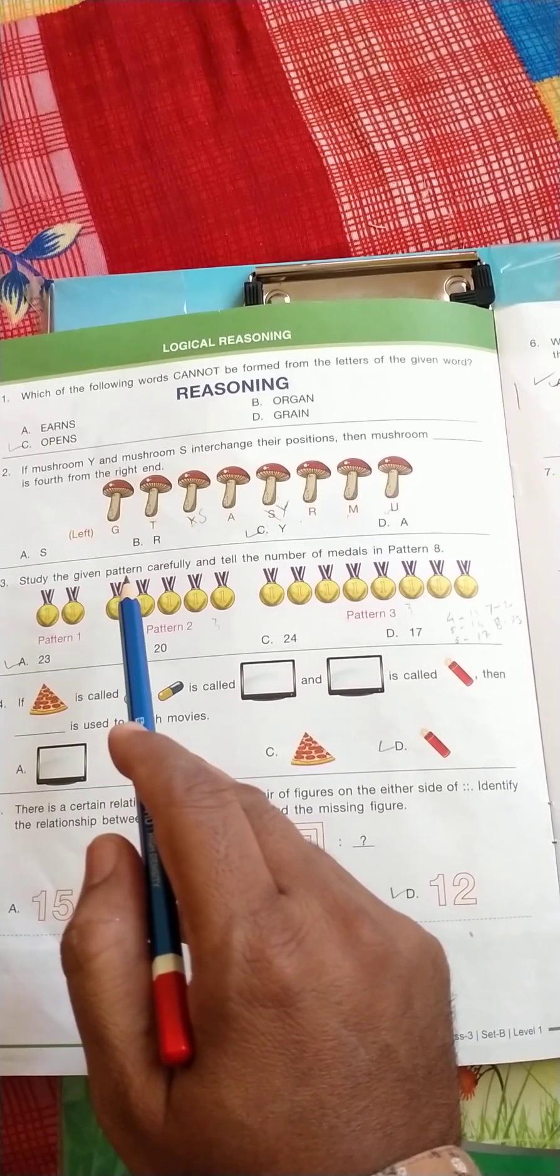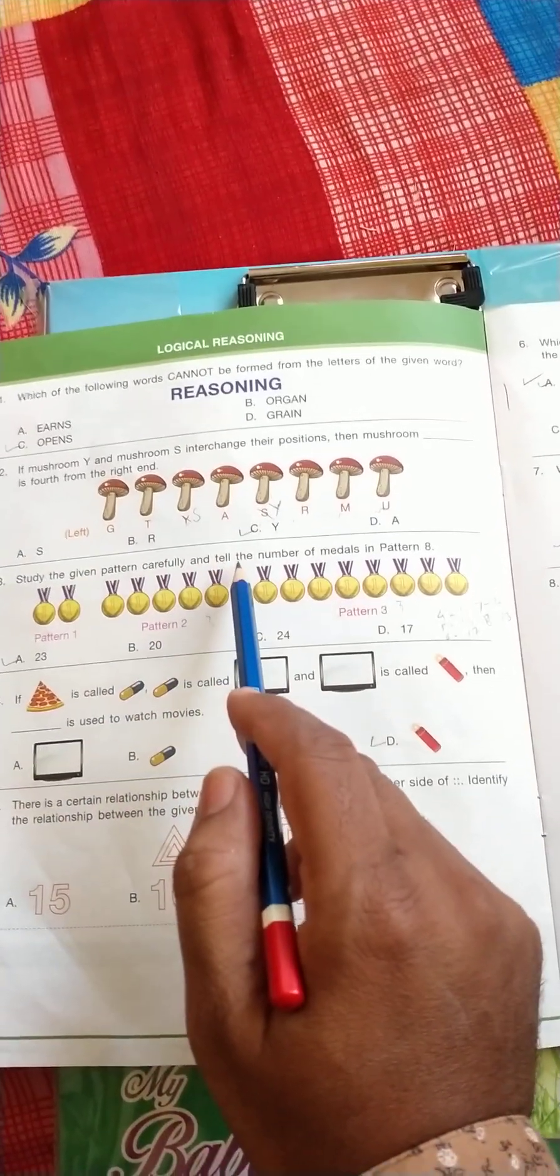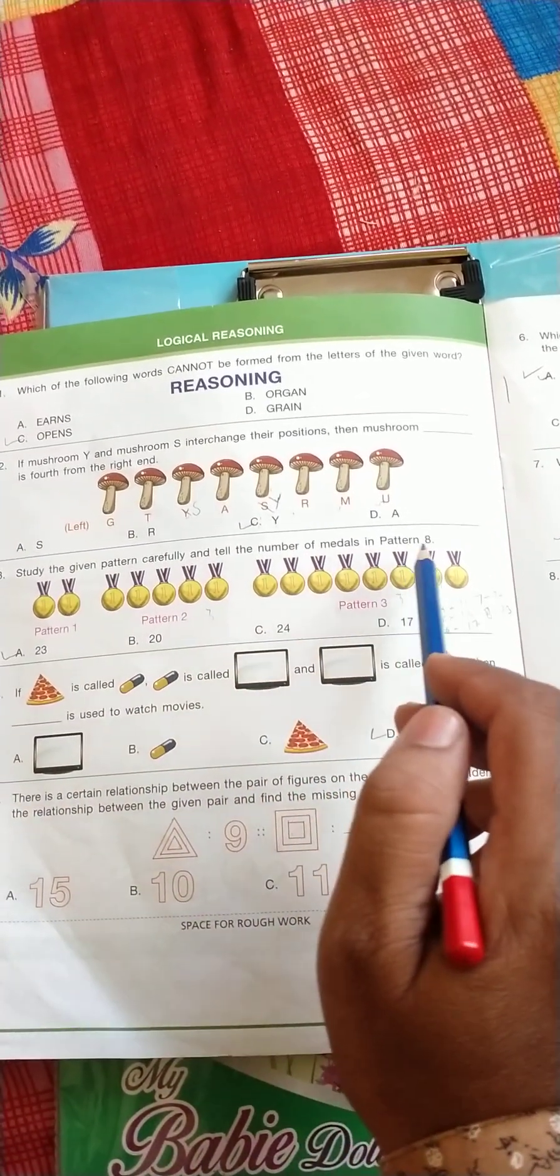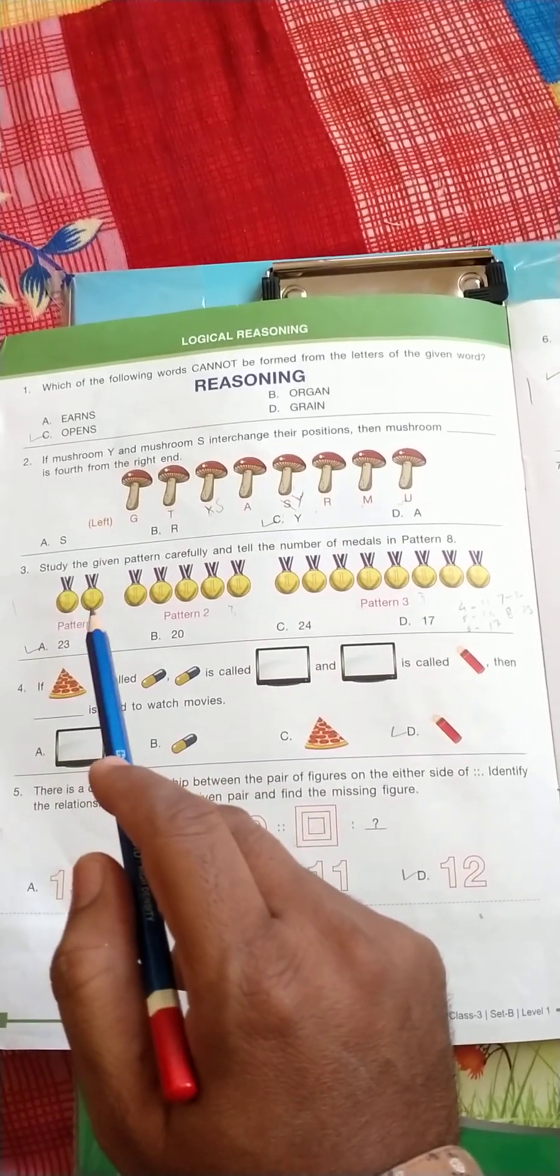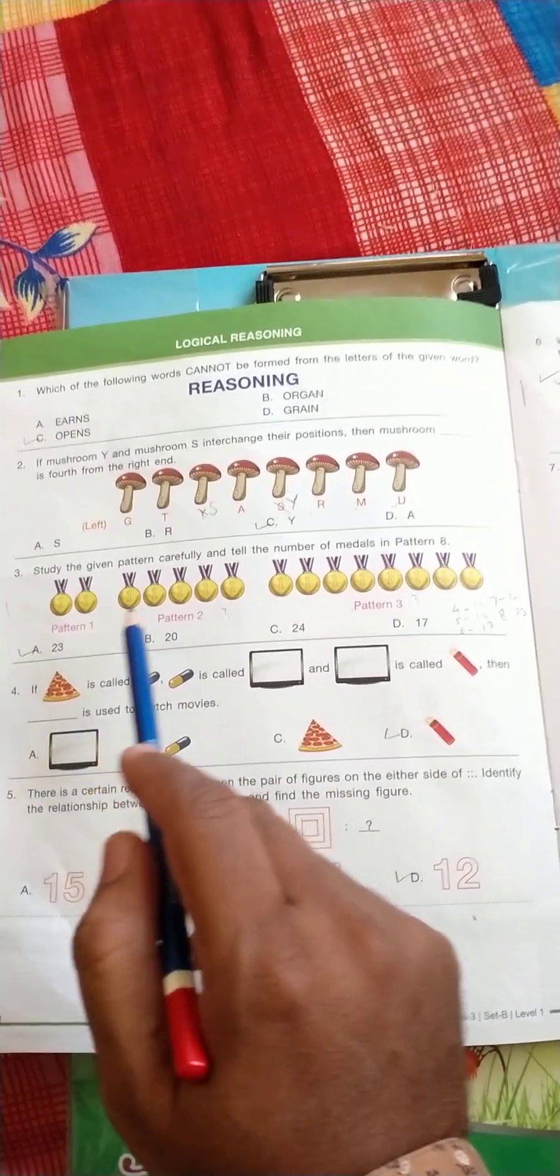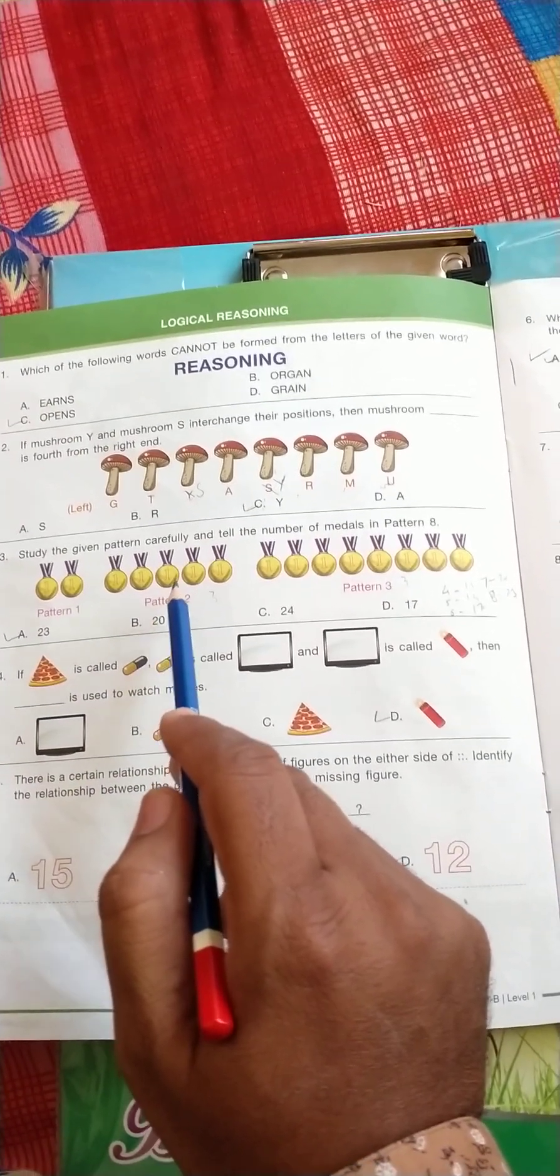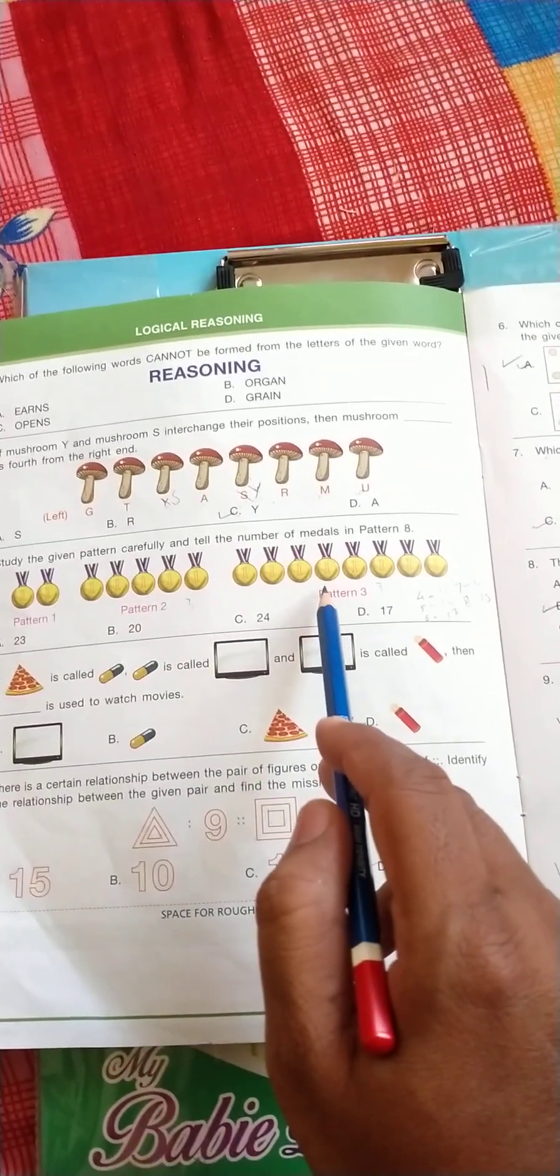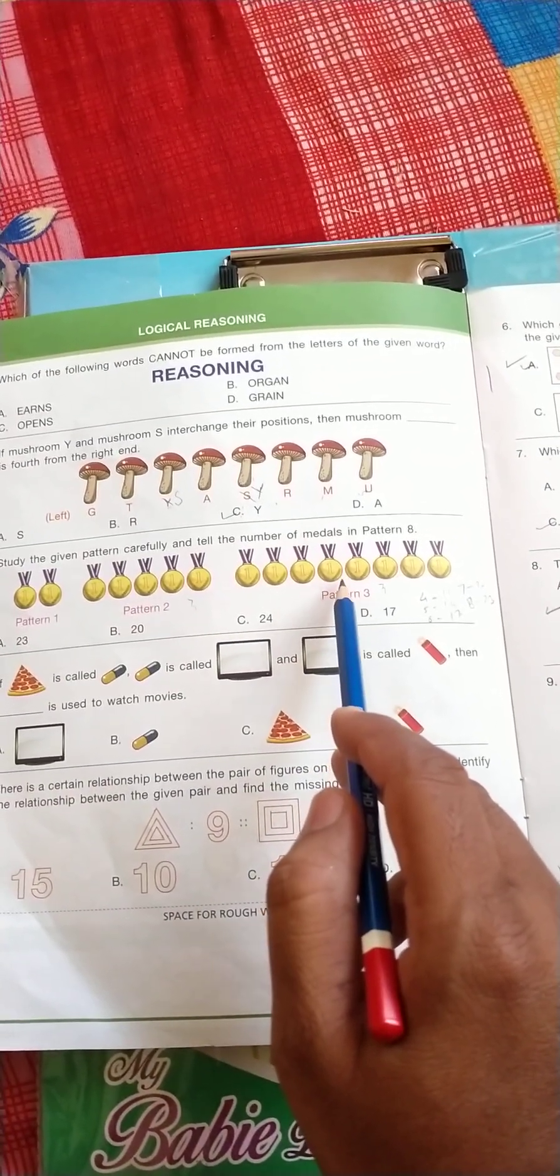Question number three: study the given pattern carefully and tell the number of medals in pattern eight. So in pattern one there are two medals, in pattern two there are five medals, and in pattern three eight medals, so it means that in every pattern increase by three.